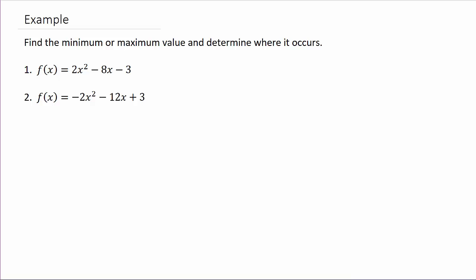In this video, we're going to look to find the minimum or maximum value of a quadratic function. We've got two functions here. Let's look at the first one. We've got f of x equals 2x squared minus 8x minus 3.